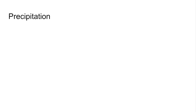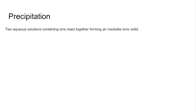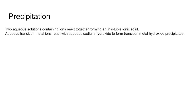Moving on to precipitation reactions — that's when two aqueous solutions containing ions react together to form an insoluble ionic solid. Aqueous transition metal ions can react with aqueous sodium hydroxide to form transition metal hydroxide precipitates, and aqueous ammonia brings about the same reaction initially. Some precipitates dissolve in excess sodium hydroxide or ammonia to form aqueous complexes.